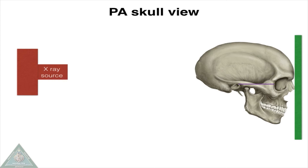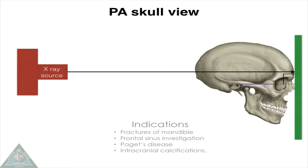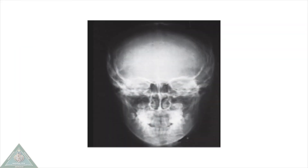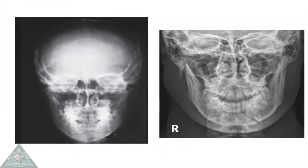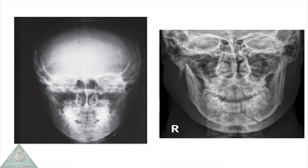PA skull view: the patient faces the image receptor in the forehead-nose position. The cantho-meatal line is perpendicular to the image receptor. The central ray of the X-ray beam is directed perpendicular to the image receptor and through the occiput. This view is indicated in cases of mandibular fractures.